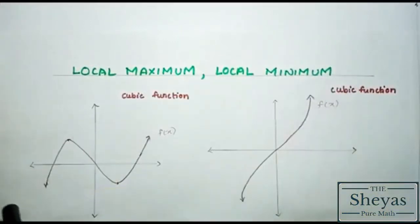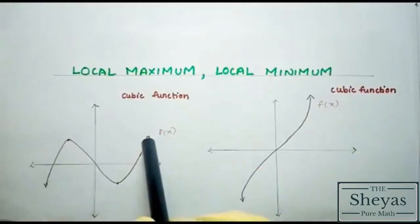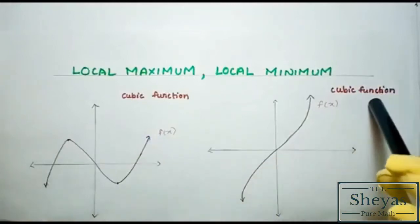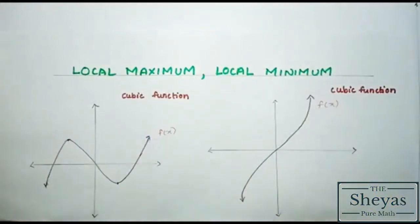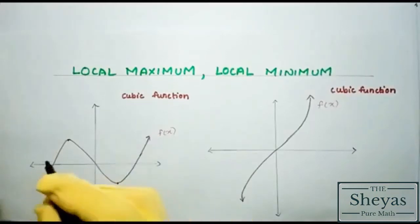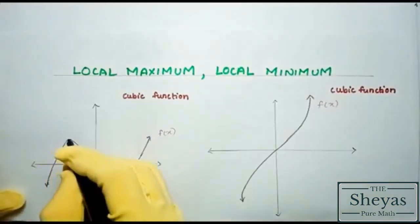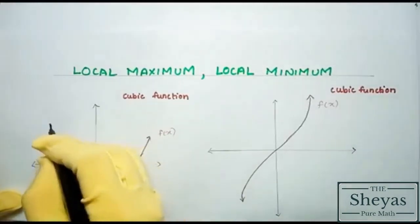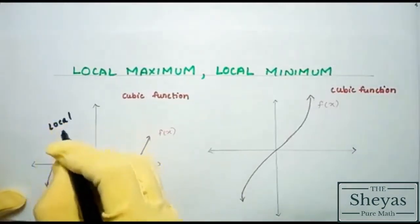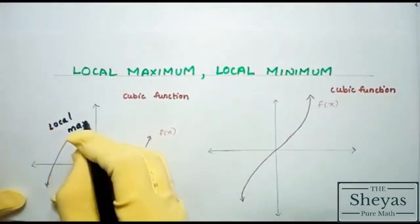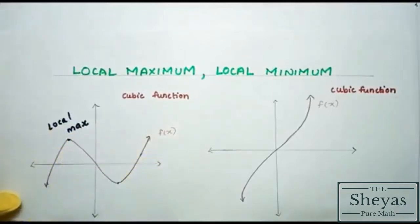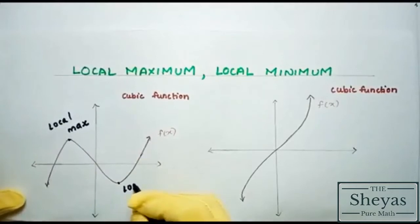This is a graph of a cubic function. In this graph, this point is the local maximum point, and this point in the graph is the local minimum point.